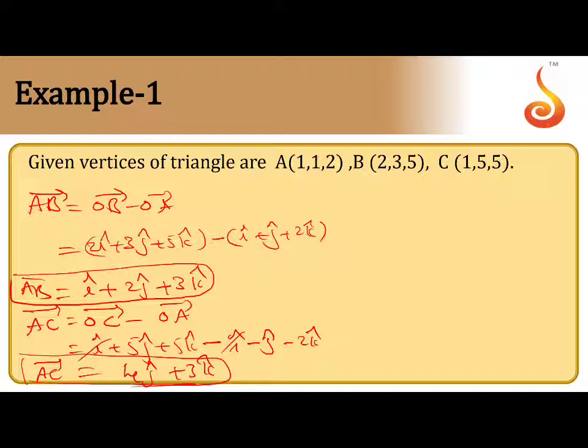Now, let us take the AB bar cross AC bar. AB bar cross AC bar. So, this you know how to find using determinant concept. So, let us take i, j, k. The first vector components 1, 2, 3 and 0, 4, 3.